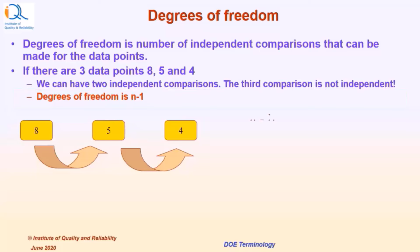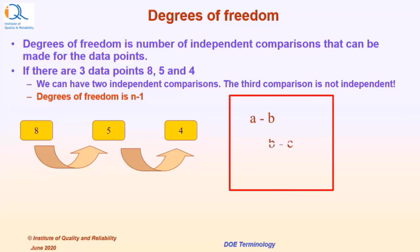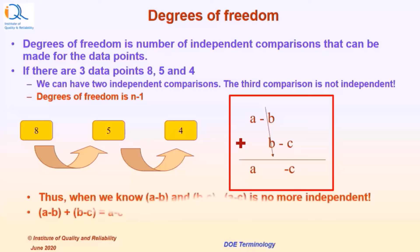In general, if we have three numbers A, B, and C, the first comparison between A and B will be A minus B, and the comparison between B and C will be B minus C. Now, if we add the two comparisons, B gets cancelled and we automatically get the third comparison A minus C, which obviously is not independent. Therefore, the degrees of freedom for three numbers A, B, and C would be 2. When we know A minus B and B minus C, A minus C is no longer independent.